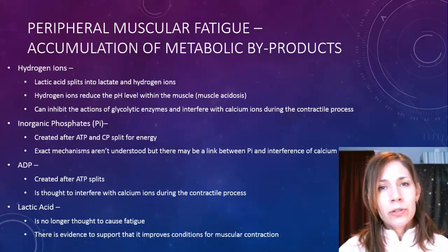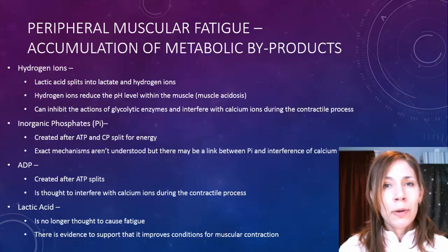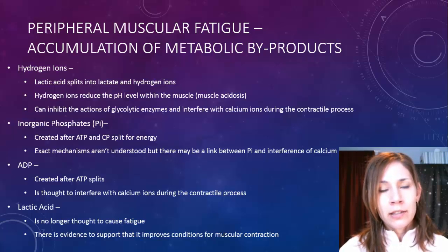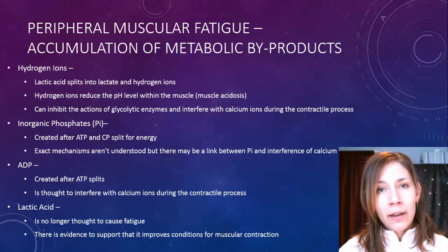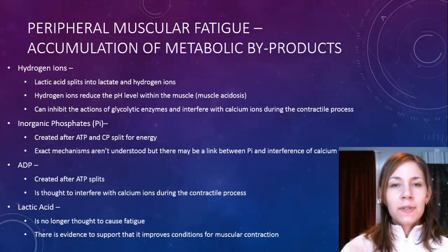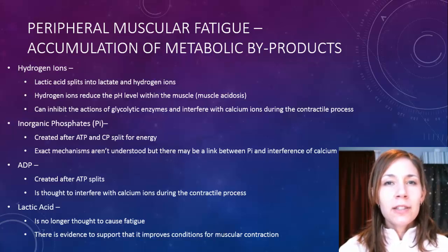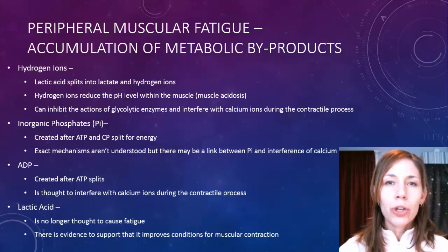Hydrogen ions are also thought to interfere with calcium ions, which are a key player in the contractile process involving actin and myosin in the sarcomere. When hydrogen ions build up, they affect calcium ion levels. Hydrogen ions are therefore quite a negative byproduct, particularly when working anaerobically, as that's when they build up even more.